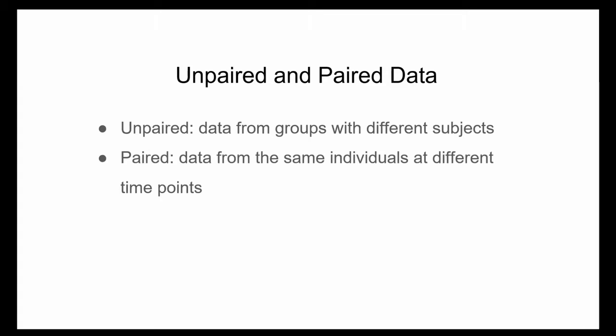Regarding unpaired and paired data: unpaired data means that both samples consist of distinct test subjects who are not related. For example, one clinical trial might measure blood pressure from one group given a medicine and another group that did not receive the same medicine — a perfect example of unpaired data. Paired samples, also known as dependent samples, are samples in which natural or matched couplings occur, such as a before-and-after drug test where blood pressure is recorded for each subject before and after drug administration. These measures are paired since each before measure is only related to the after measure from the same subject.